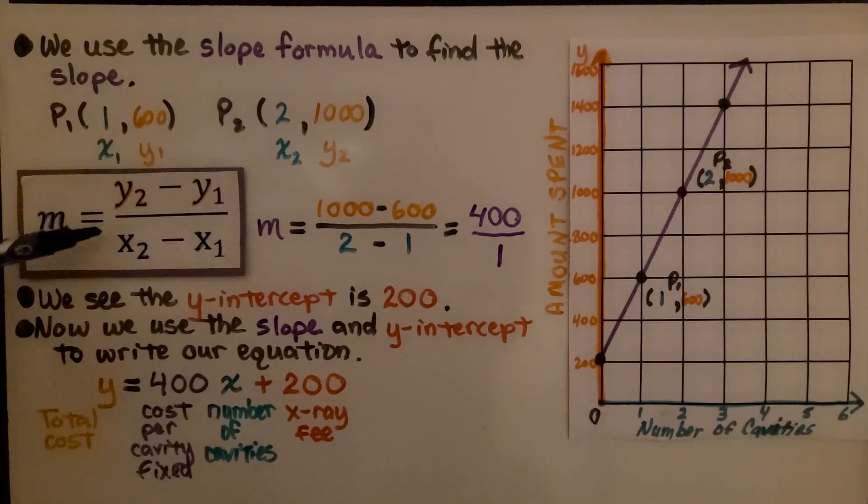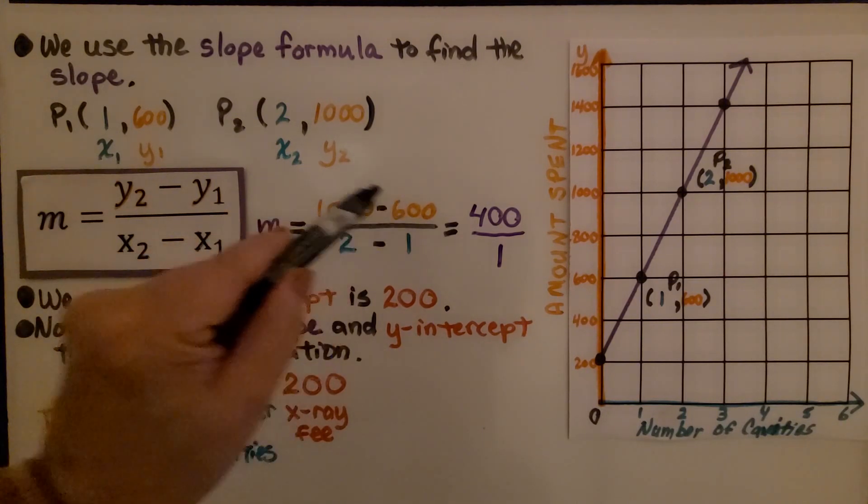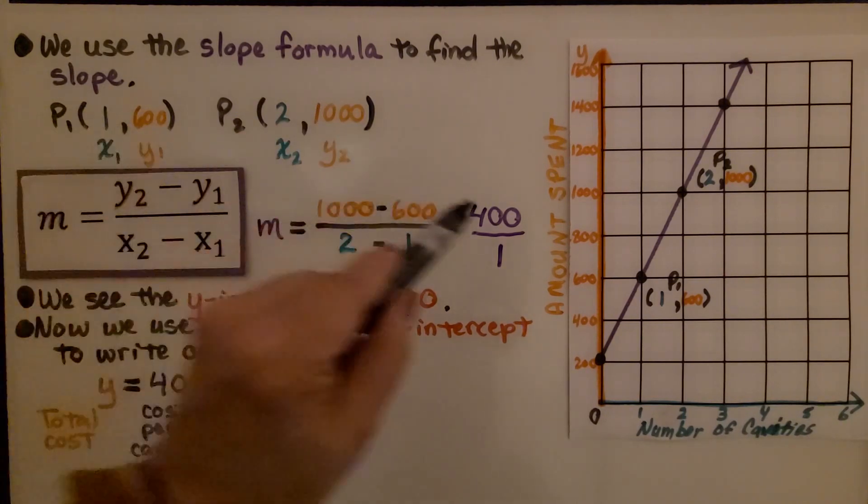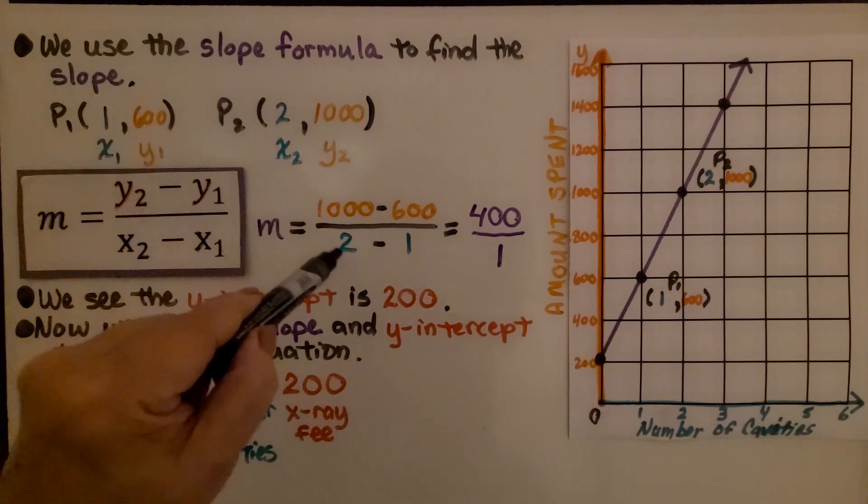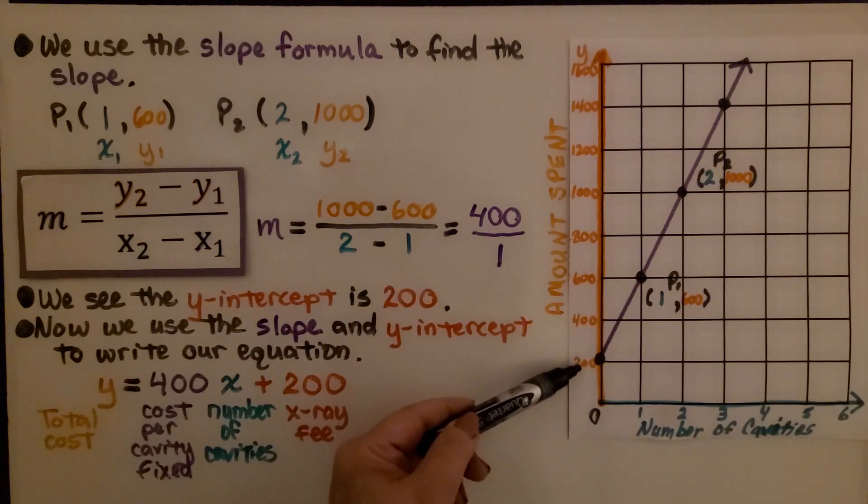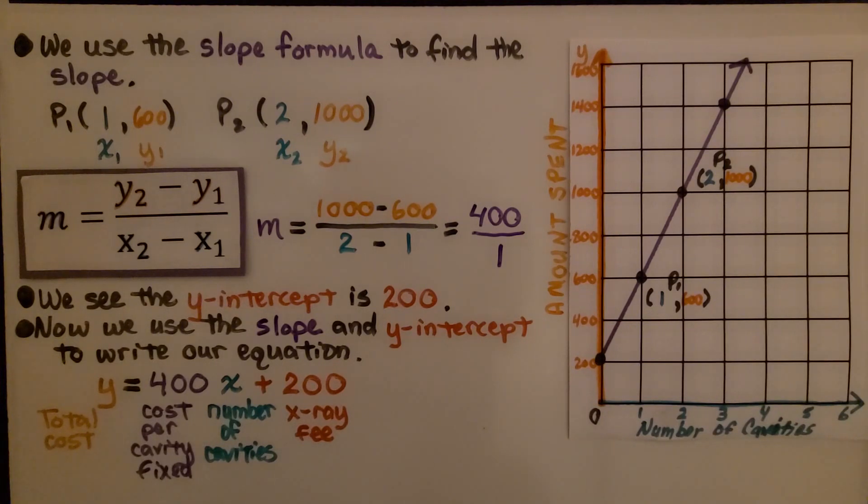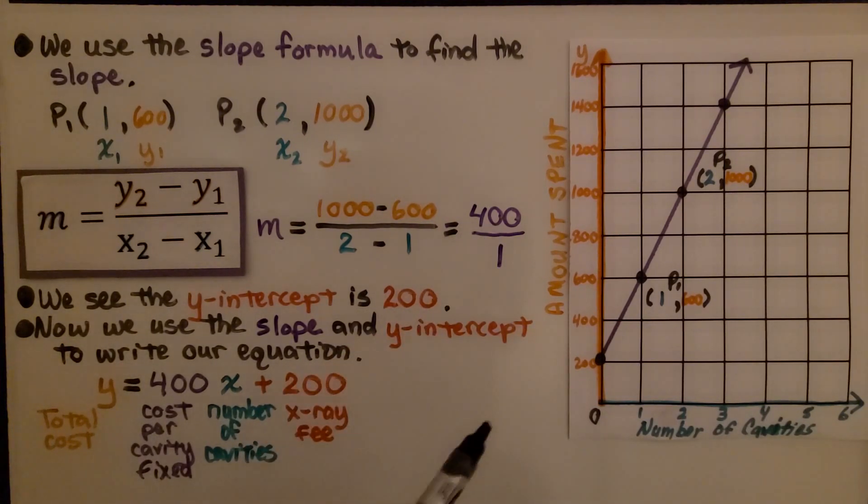Using the slope formula, we do the second y minus the first y, so we have 1000 minus 600. That's going to give us 400, and we do the second x minus the first x, 2 minus 1, which gives us 1. We see the y-intercept is 200. Now we use the slope, 400 over 1, or 400, and the y-intercept, 200, to write our equation.